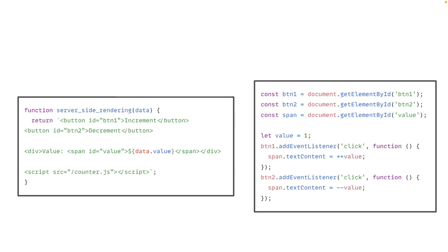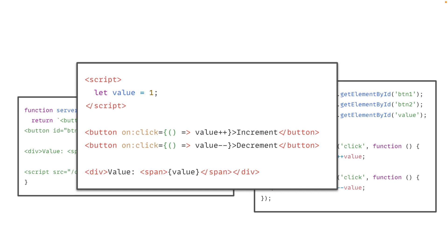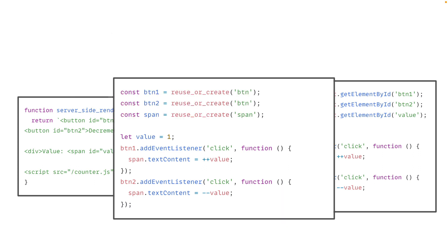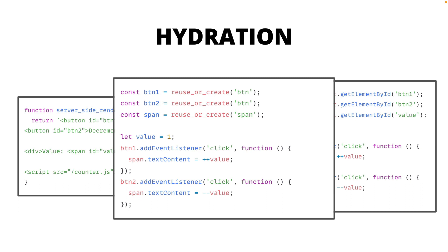So how does the framework allow us to do that with just one piece of code? Instead of having the client-side code create all elements from scratch, we try to reuse the elements created by server-side rendering. The server-side rendering returns HTML which is parsed and creates DOM nodes, so we reuse those elements. We go through the same process as client-side rendering, except when it's time to create DOM elements, we check whether the element is already there and reuse it — or create it if not. Once we have references to those elements, we can attach event listeners just like in client-side rendering. This process of claiming or reusing elements from server-side rendering and attaching event listeners is called hydration, and sometimes rehydration.